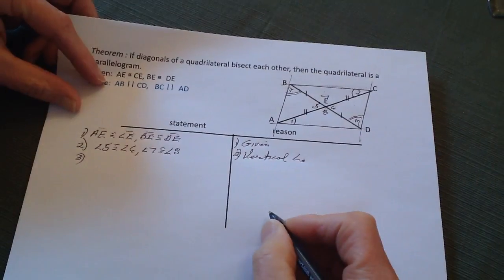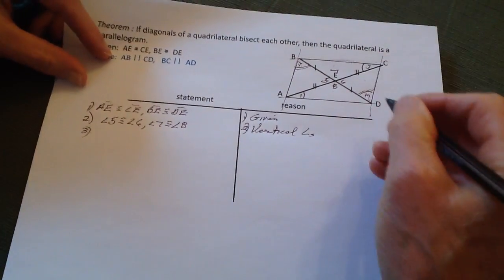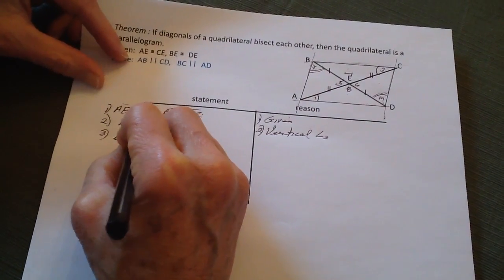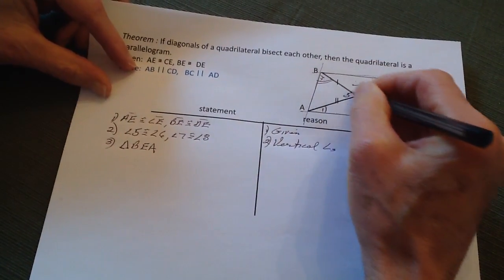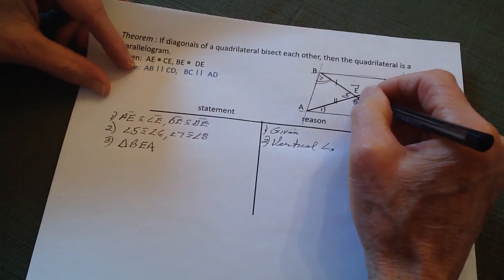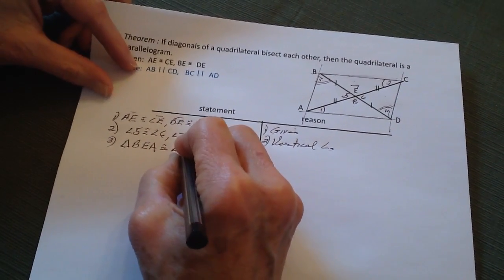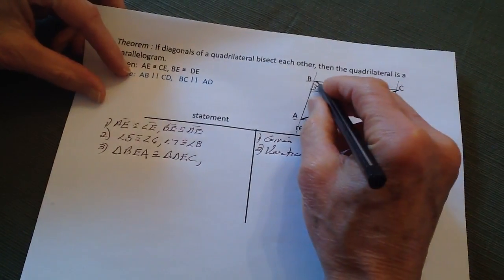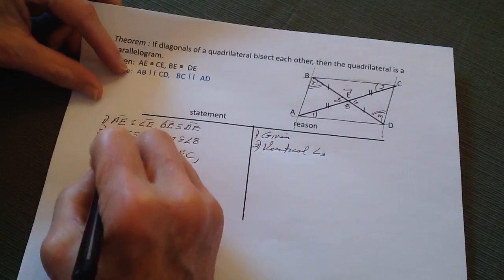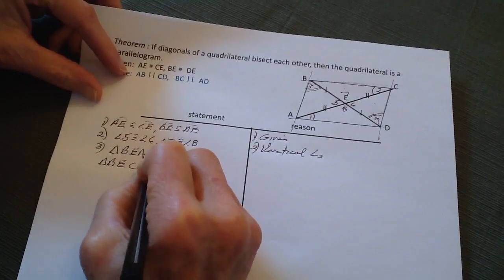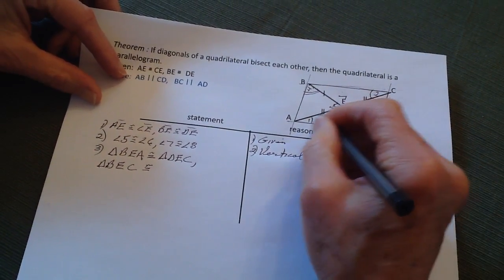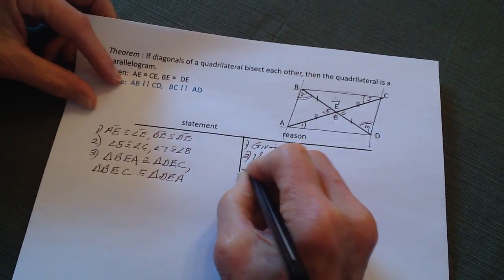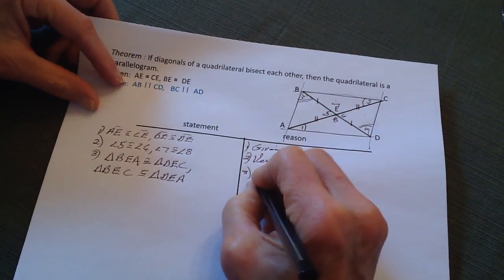3. Now, let's set this up. Triangle BEA is congruent to triangle DEC. And we also know that triangle BEC is going to be congruent to triangle DEA. And we know that all of that is done because of side angle side.